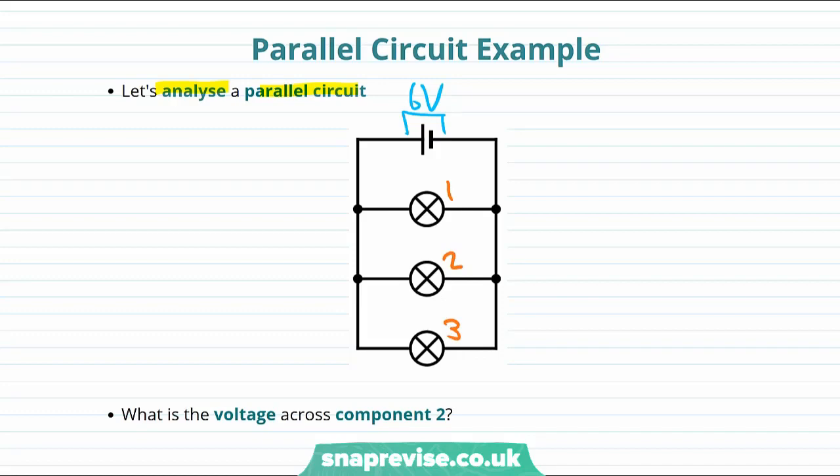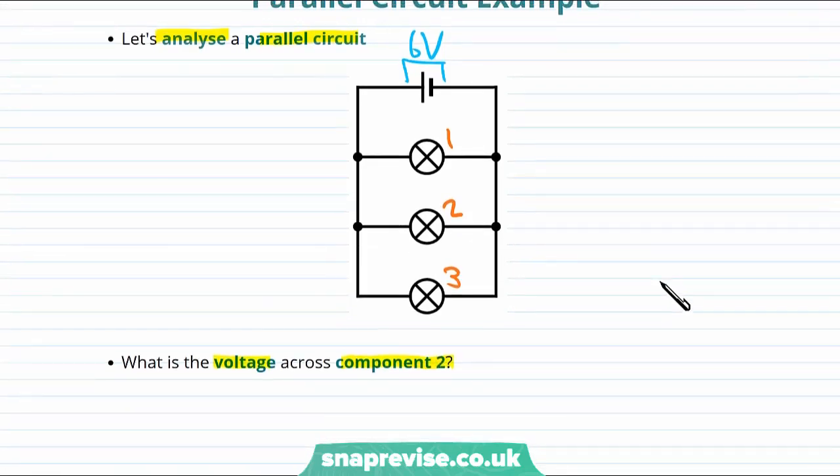The first question I want to ask is what is the voltage across component two? To answer this question you need to remember one of the first rules we said in this video, which was that in a parallel circuit, the potential drop across any of the components is the same as the potential drop on the cell. So the potential drop between here and here, the potential drop or voltage across component two is simply six volts.